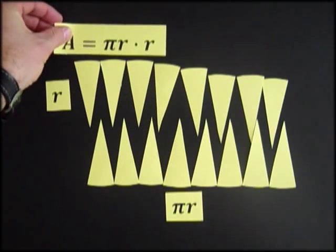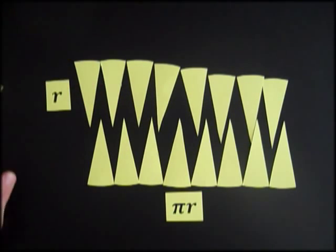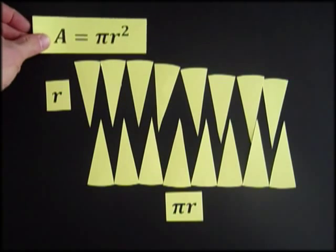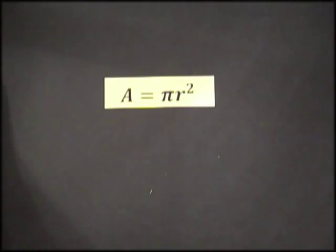Now remember what the area was for a rectangle. So the area of our rectangle is r times pi r, or pi r squared. So that's one explanation of why the area of a circle is pi r squared.